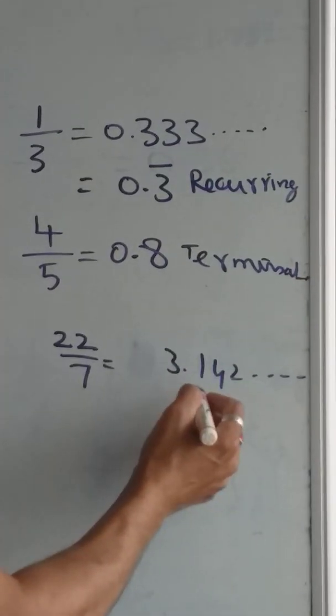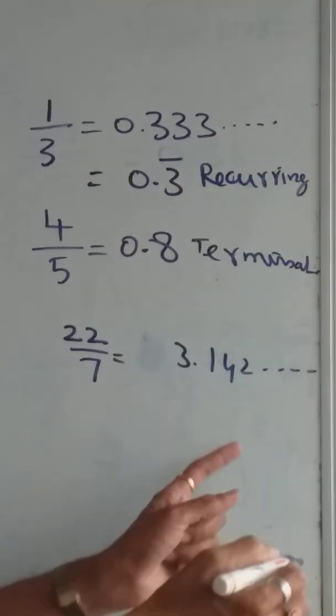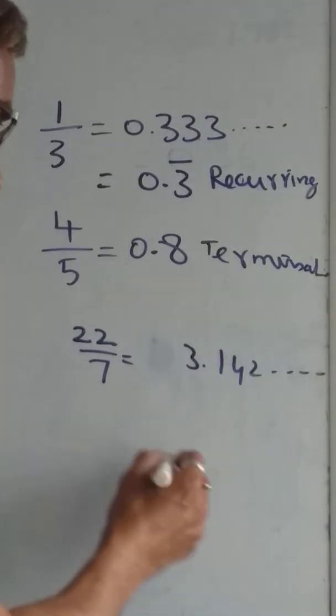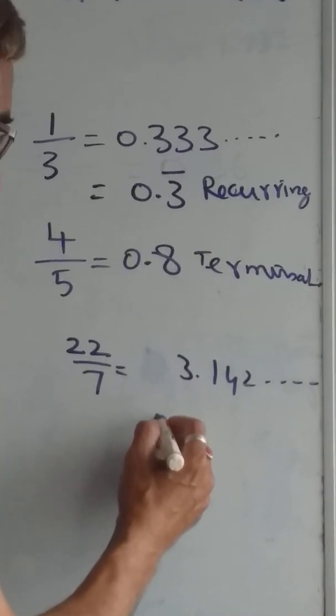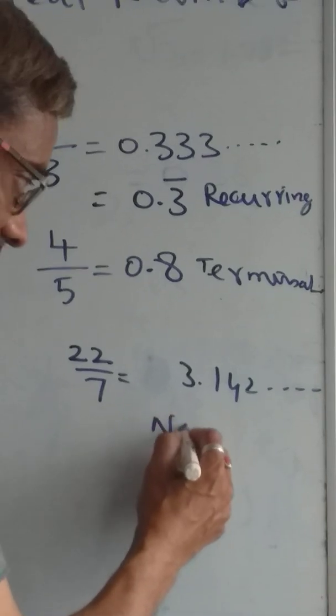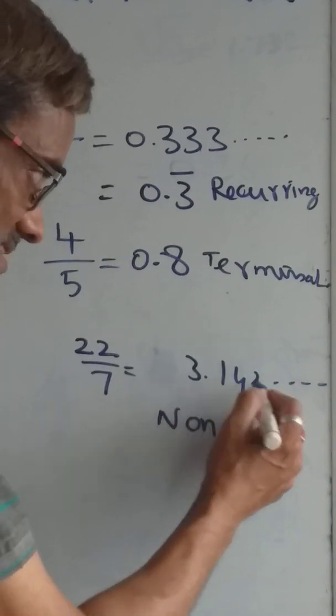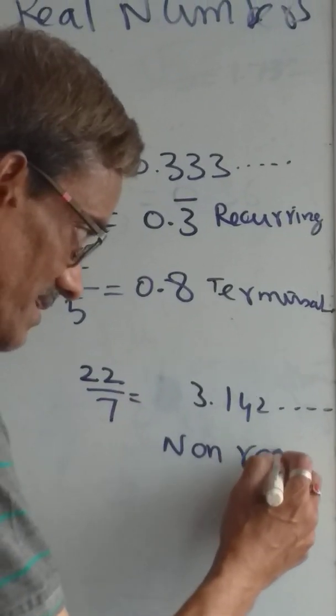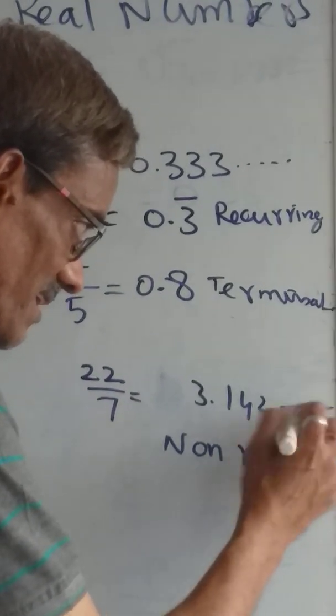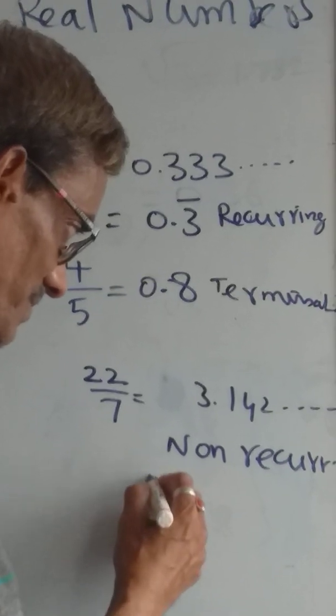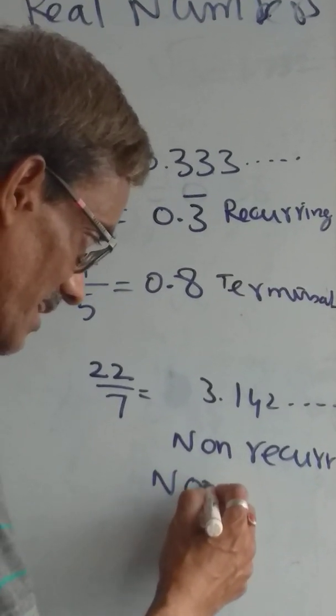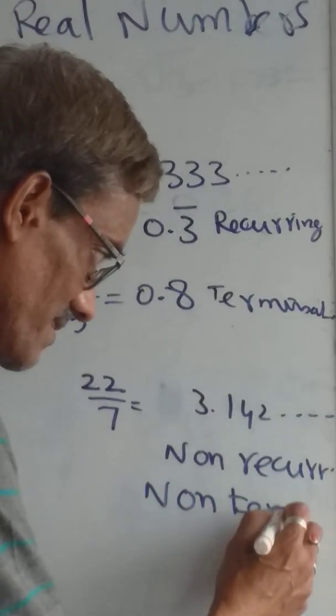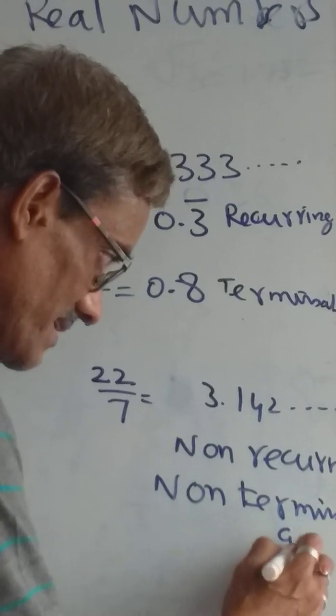But in these cases, the number keeps changing: 1, 4, 2. The next number also changes. So this number we call non-recurring, non-terminated. The number doesn't stop, it keeps going.